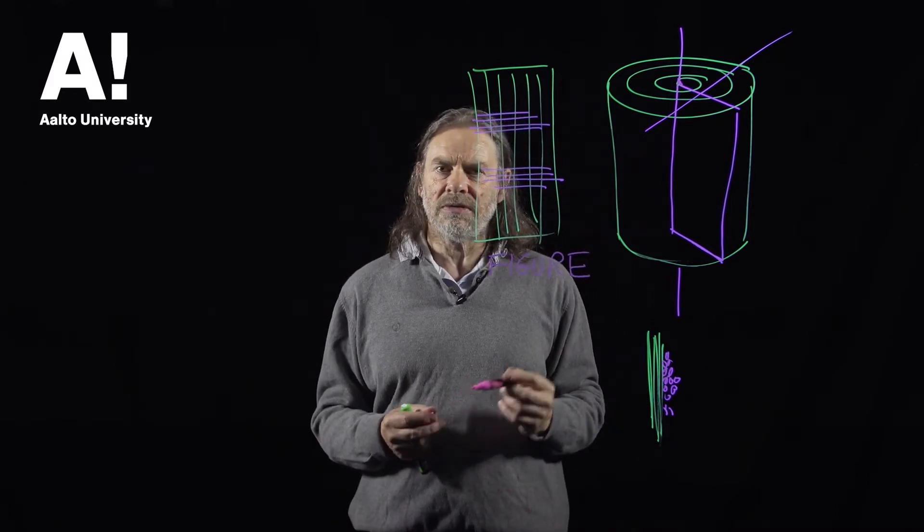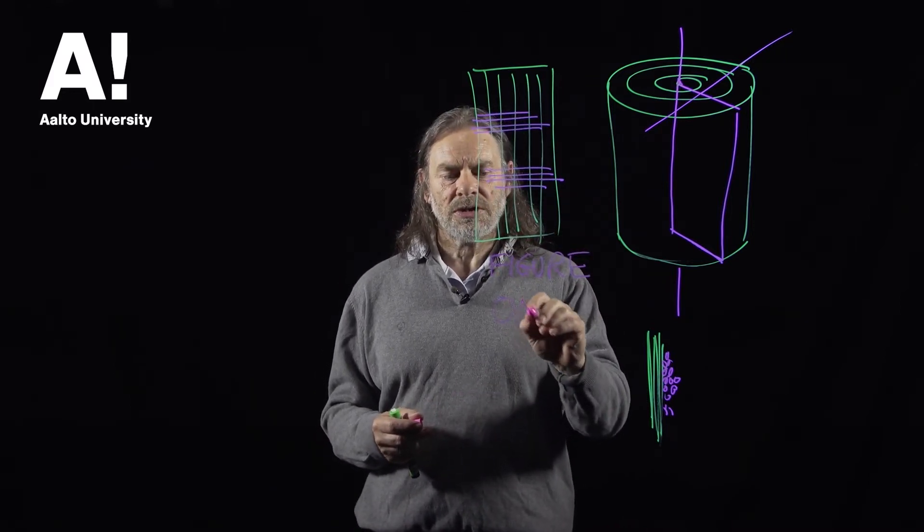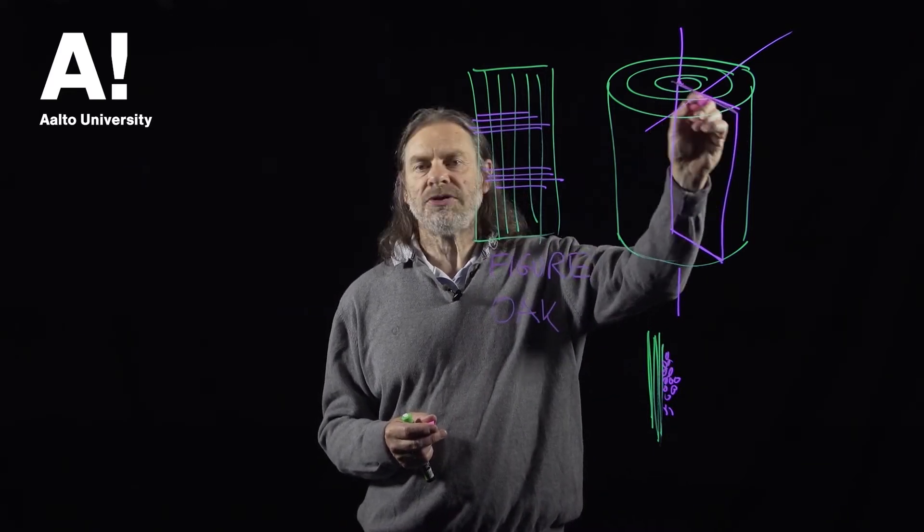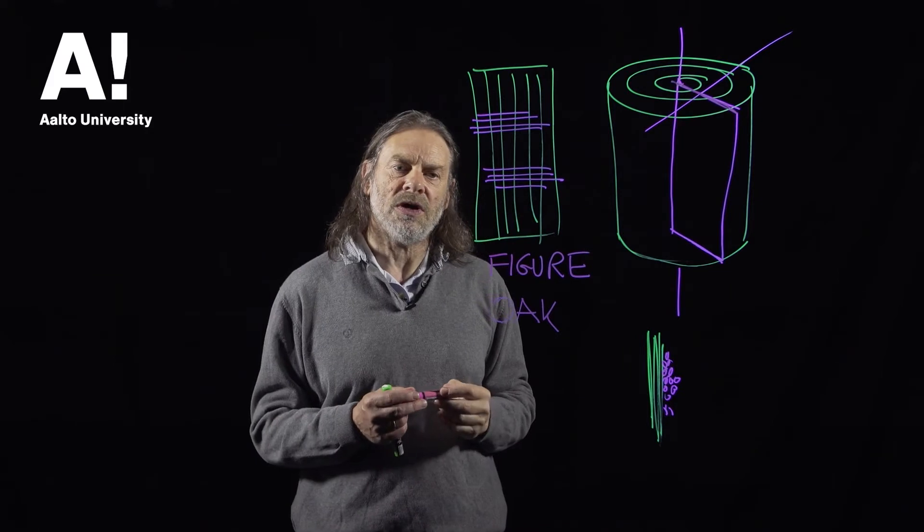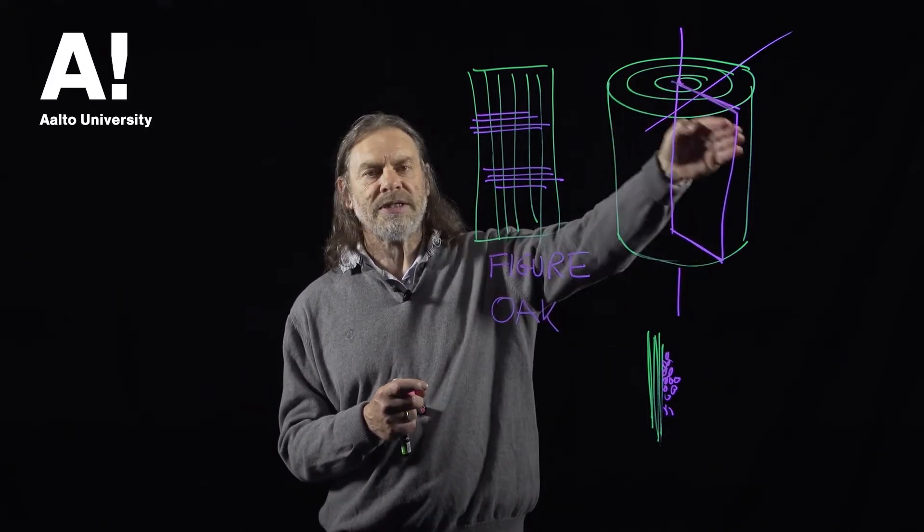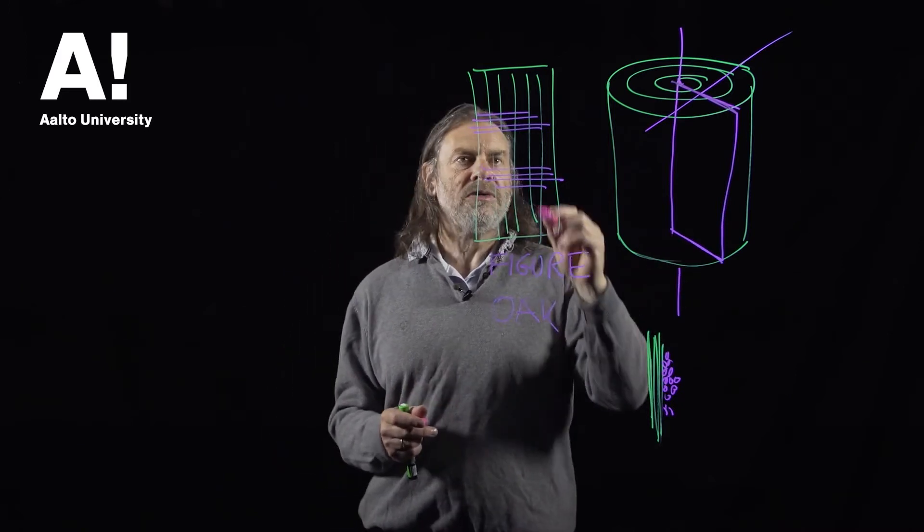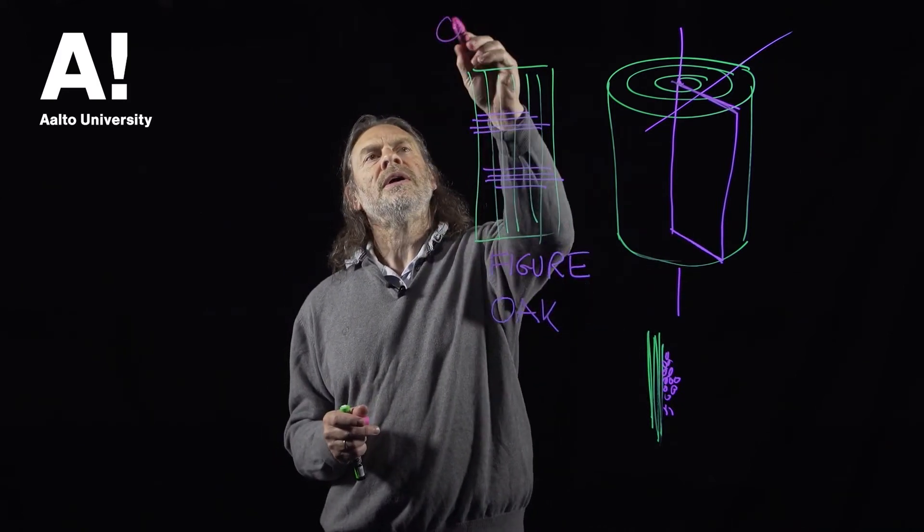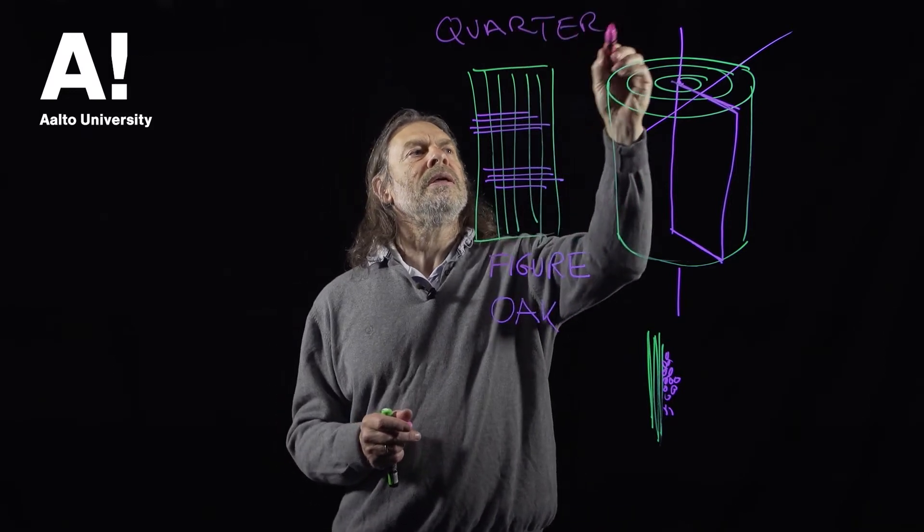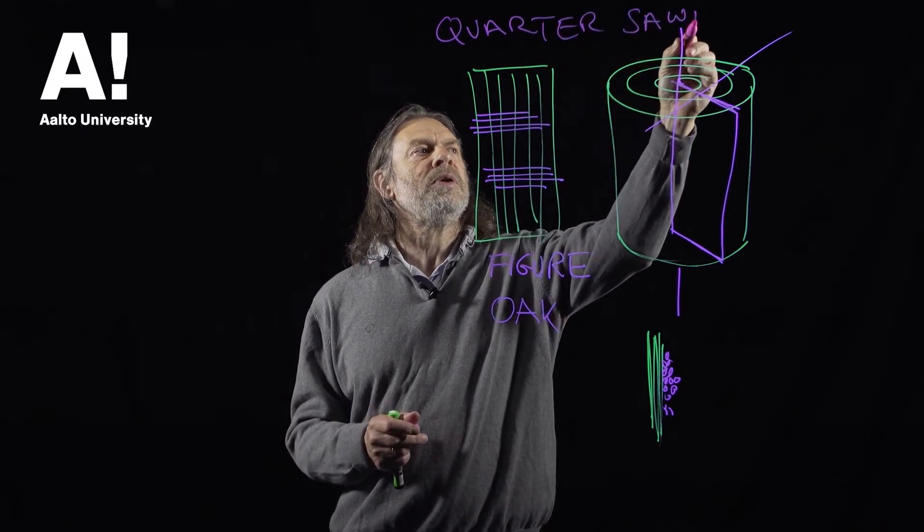A classic example of that is if you look at oak, which if you split it along the radius will give very attractive patterns. And quite often with furniture, wood is deliberately cut in this direction which is known as quarter sawn, and the reason for that is to give a very attractive appearance to the wood.